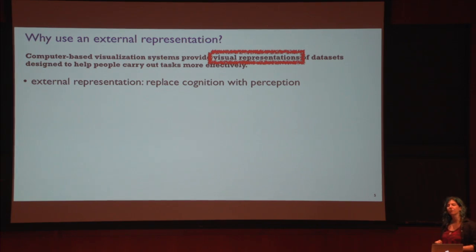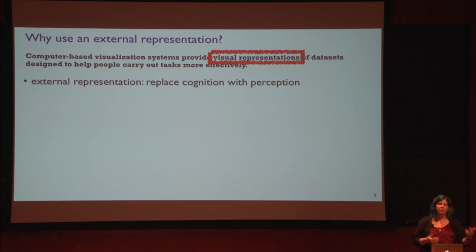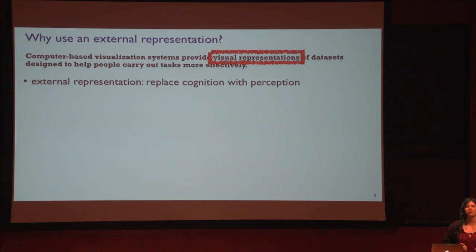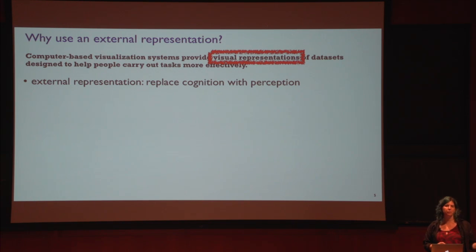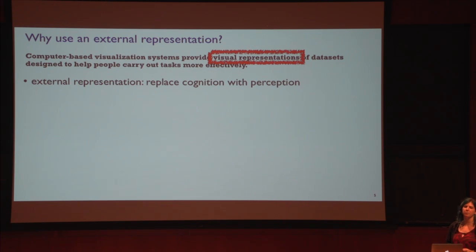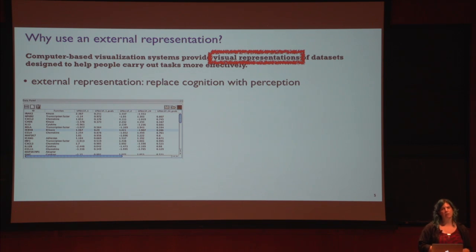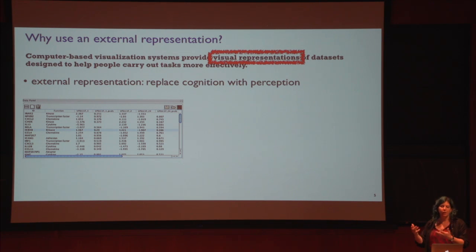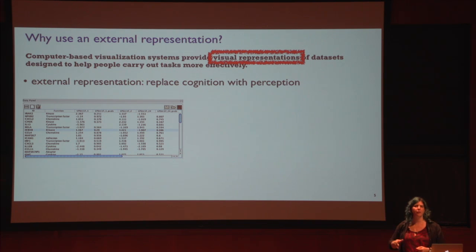Why is it interesting to have a visual representation in particular? That's a special case of the more general question of an external representation. The goal is to figure out when it's appropriate and viable to replace a cognitive act with a perceptual act. For example, say I give you a table of numbers — gene expression levels from a bunch of genes — and I ask you to quickly tell me roughly how many are above zero versus below zero.